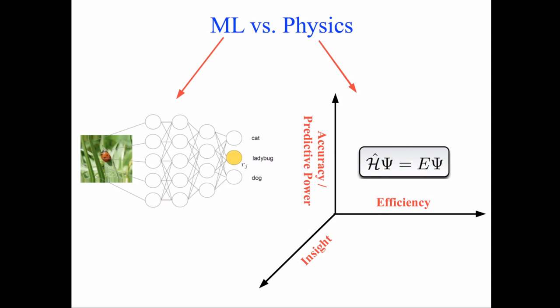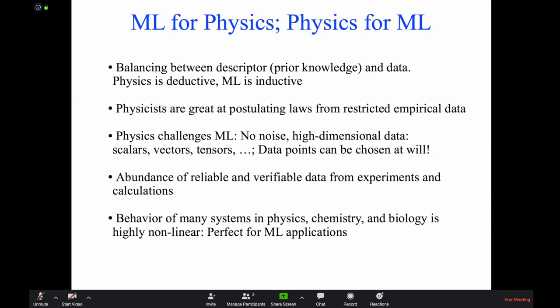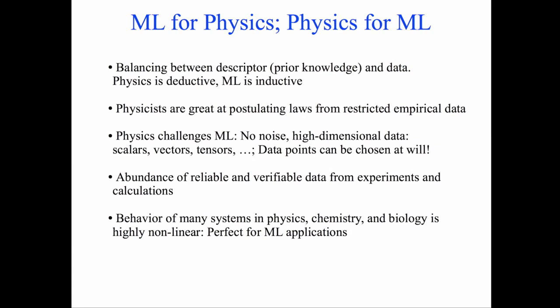The question is how we combine machine learning — which addresses regression and classification — with physics to learn solutions of the Schrödinger equation that are still accurate, efficient, and give us insight. Combining machine learning and physics is beneficial for both. Applying ML to physical and chemical data always involves balancing between the descriptor or representation of your data — which encodes prior knowledge — and the data itself. Physics is deductive, machine learning is inductive, providing a feedback between two completely different approaches.